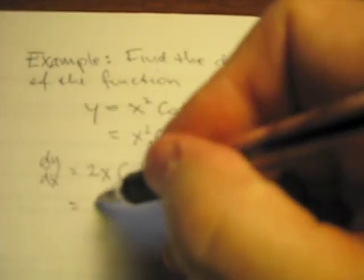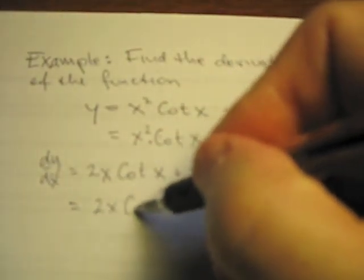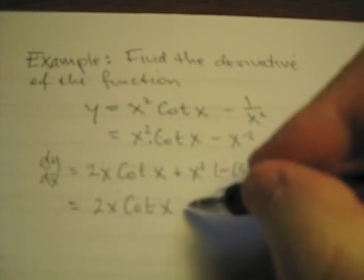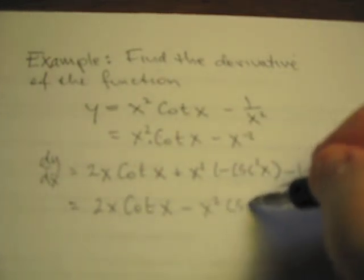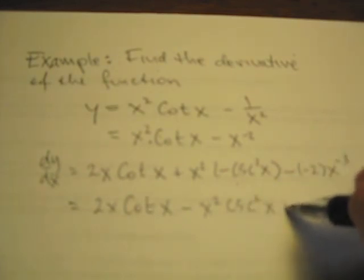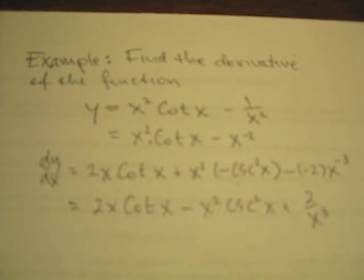So now we can tidy things up. We can get 2x cotangent x minus x squared cosecant squared x, and then we're going to have plus 2 over x cubed. And that will be our derivative.